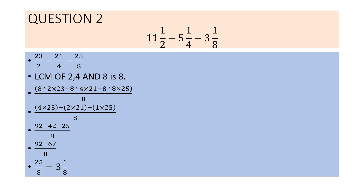Question 2: 11 and 1 by 2 minus 5 and 1 by 4 minus 3 and 1 by 8. Converting to improper fractions: 11 into 2 plus 1 gives 23 by 2; 5 into 4 plus 1 gives 21 by 4; and 3 into 8 plus 1 gives 25 by 8.